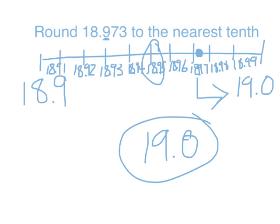So remember, when you round to the nearest tenth: first, identify the two tenths your number falls between. Then, graph the hundredths between those two tenths. And use your number line to help you figure out which tenth it is closest to.